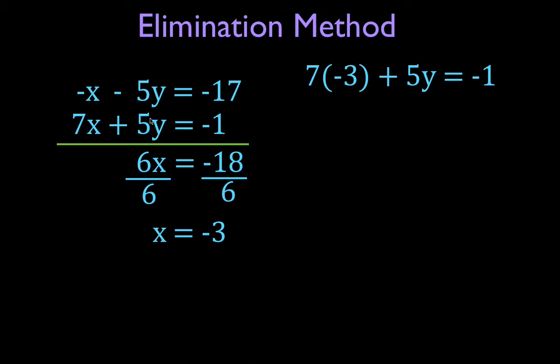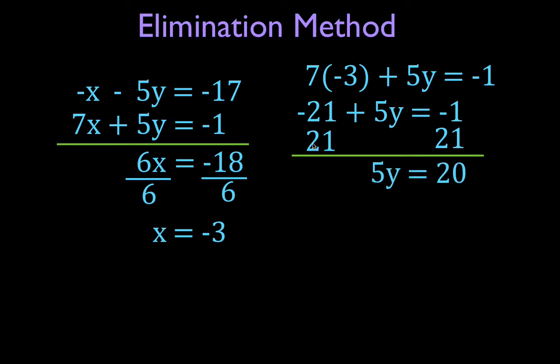This is 7x, so this is 7 times -3 plus 5y equals 1. Simplify, 7 times -3 is -21 plus 5y equals 1. Now I want to move this term to the other side because I want to solve for y. So I'm going to add the opposite, which is 21, to both sides. The 21's cancel, I get 5y equals 20, I divide each side by 5 and I get y equals 4.